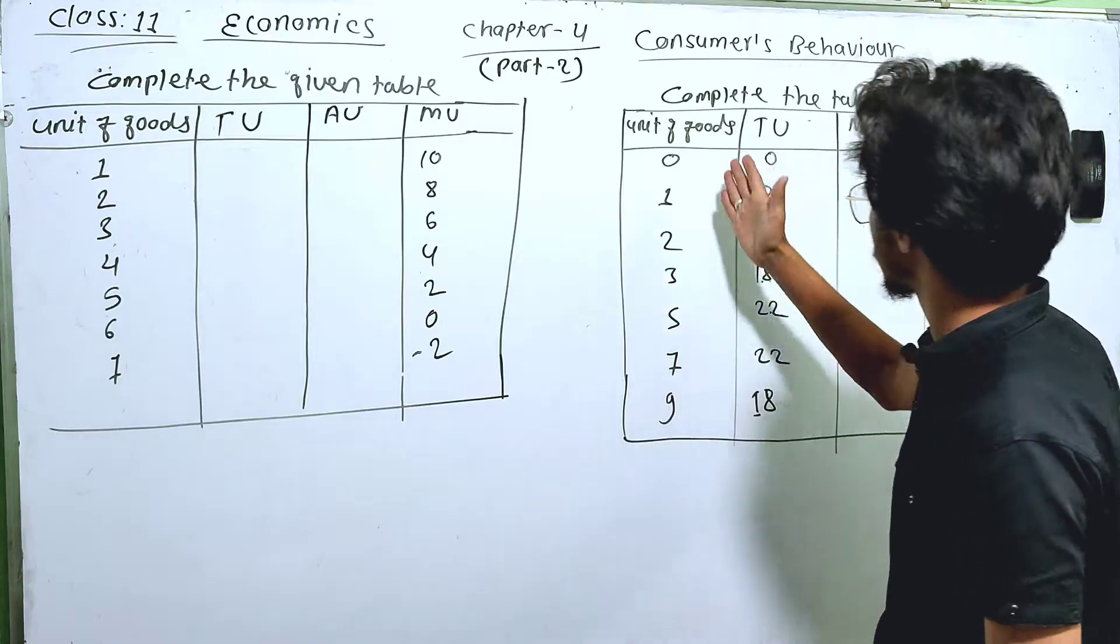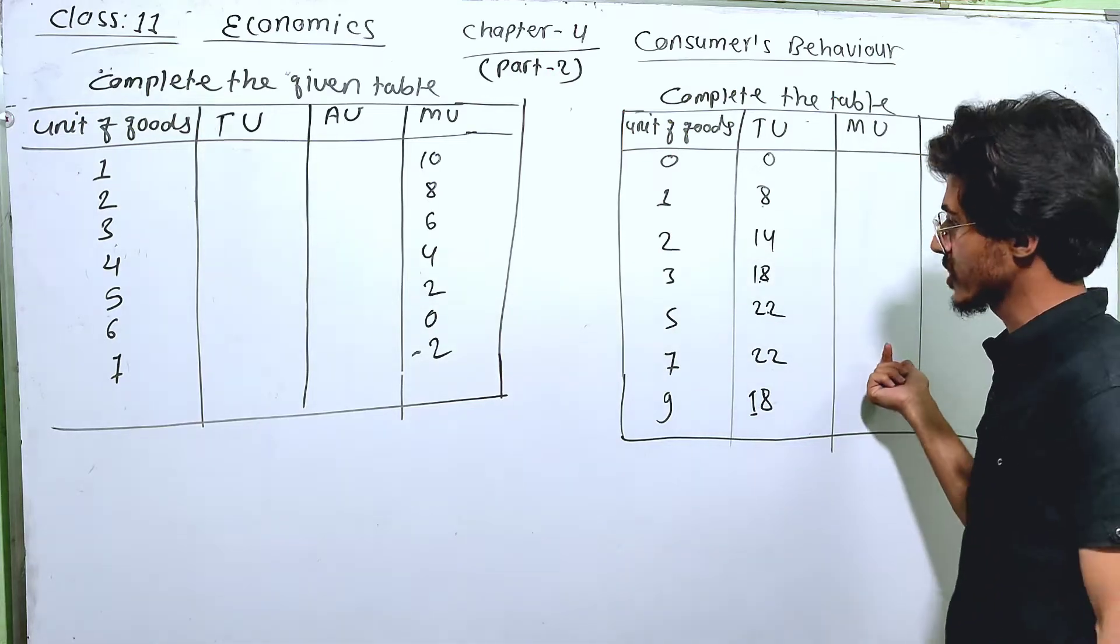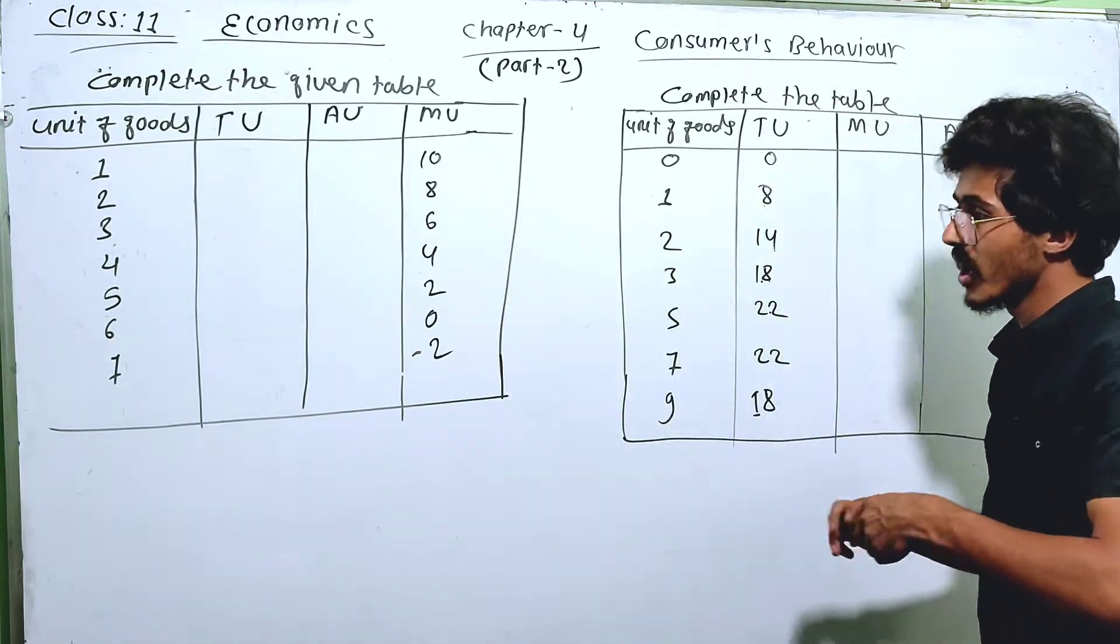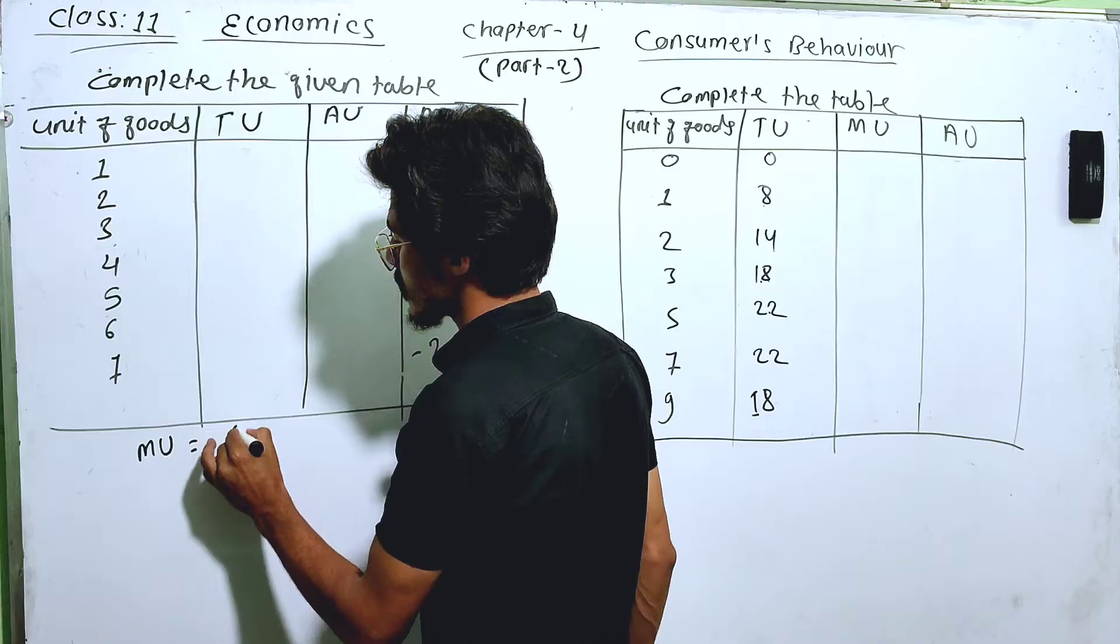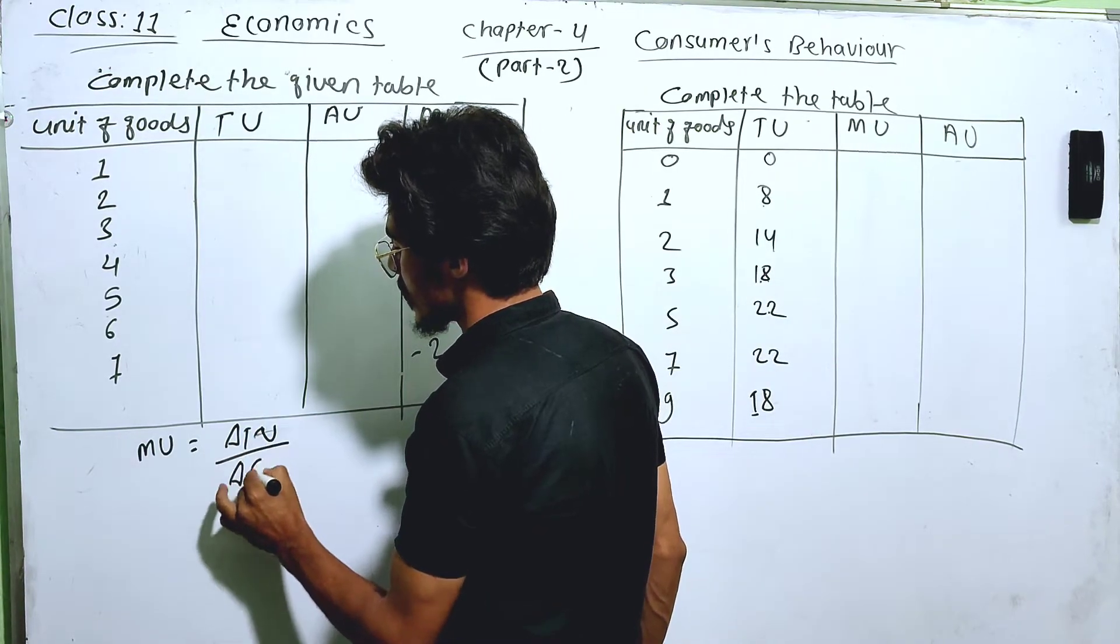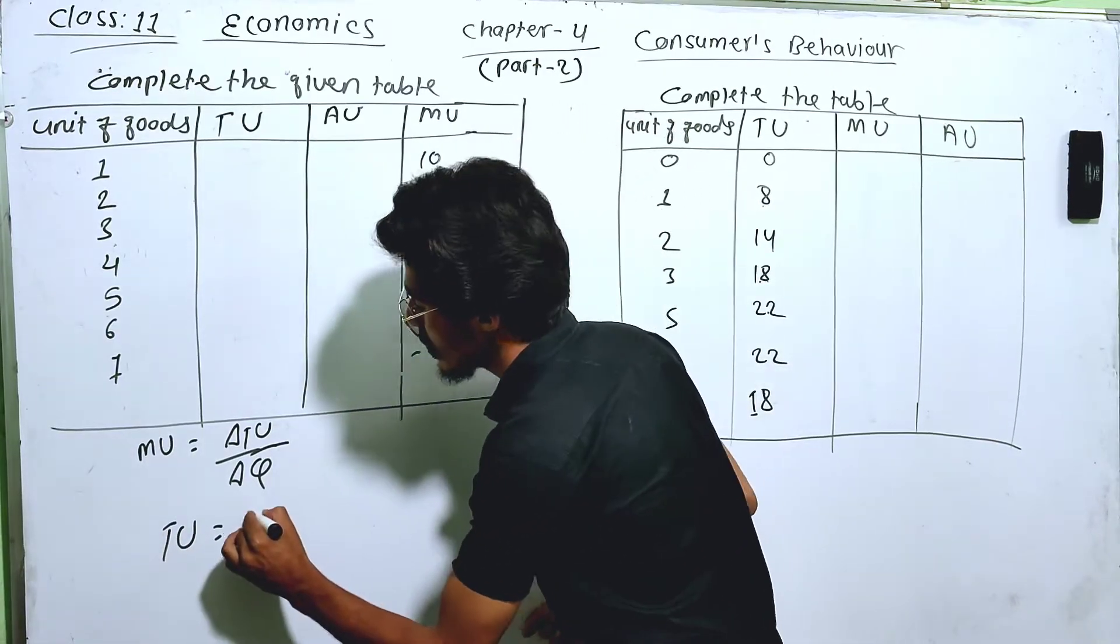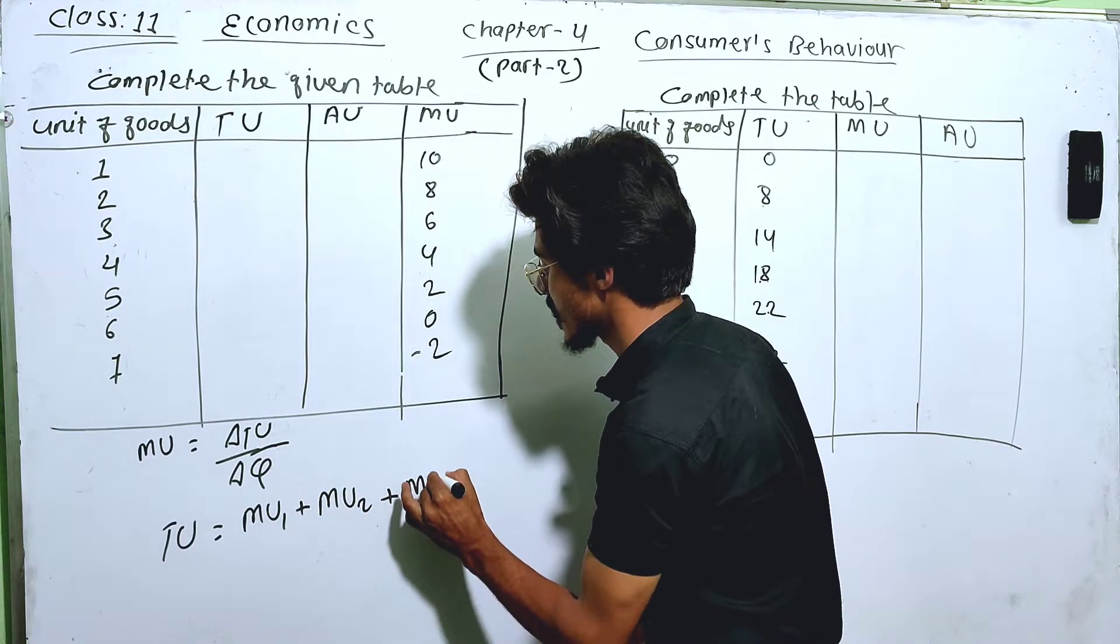We have to find the unit of goods and TU. We have to find the total utility and average utility. What is the marginal utility? Delta U divided by delta quantity. The marginal utility is marginal utility one plus marginal utility two, second marginal utility plus marginal utility, third marginal utility.